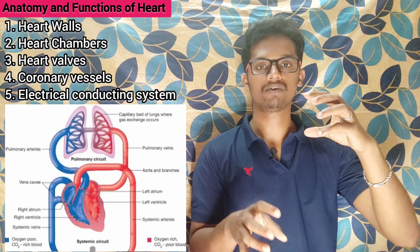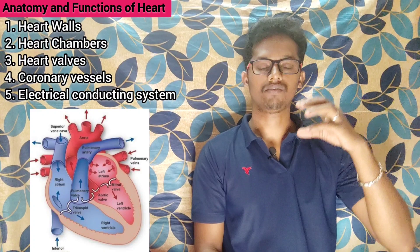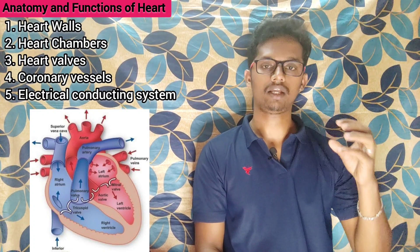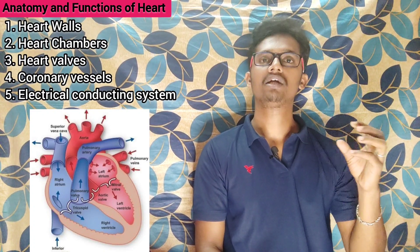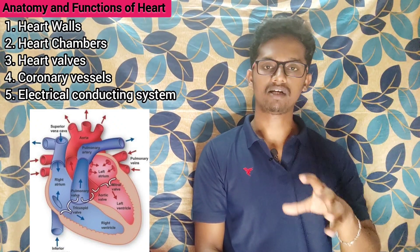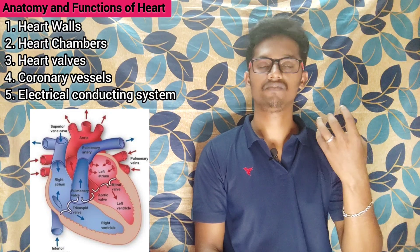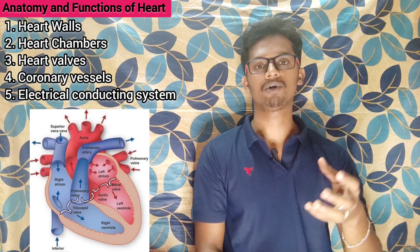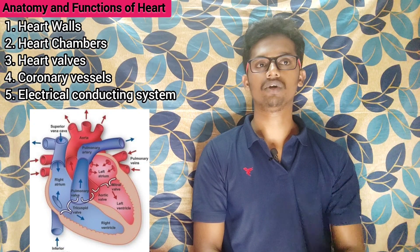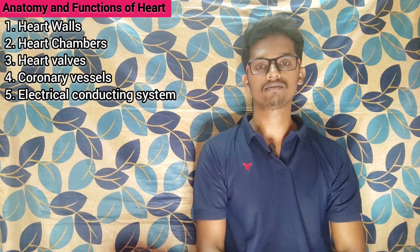From the left atrium, blood goes further into the left ventricle. Then from the left ventricle, blood goes to the aorta and then to each and every part of the body, supplying nutrients and oxygen through the blood to each and every tissue and cell.